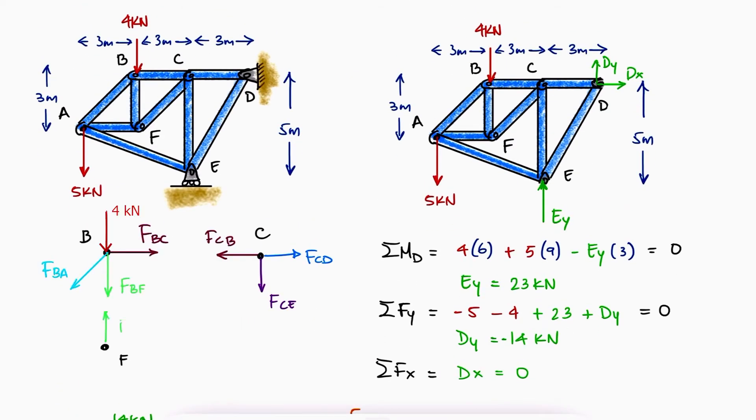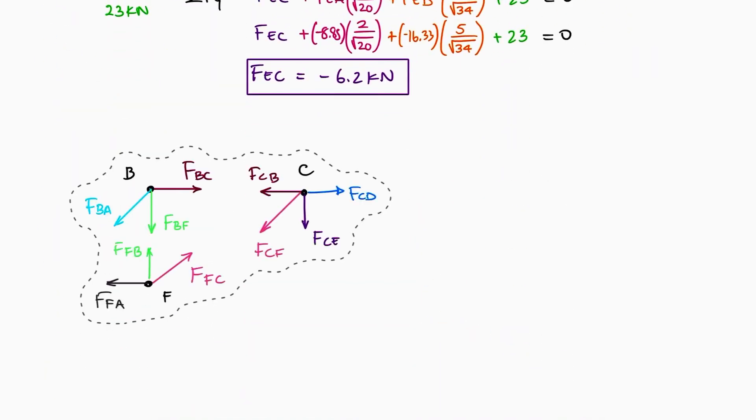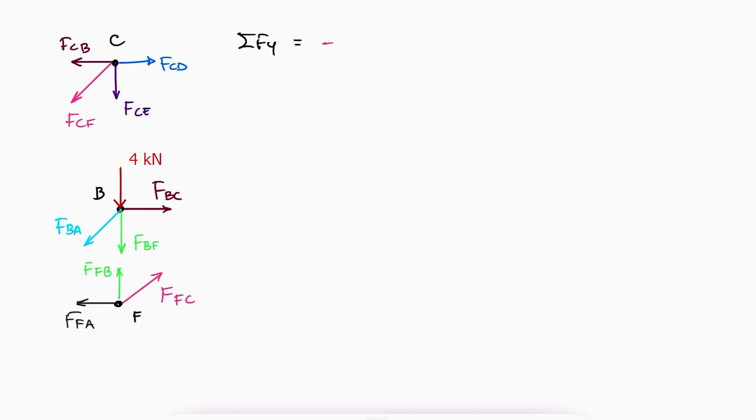Moving on to joints C, B and F, we see that at joint C, we only have two unknown variables. Once we find FCB, we'll also have two unknown variables at B and finally only FFA as an unknown variable at F. So, starting with joint C, we do sum of forces in Y to find FCF and sum of forces in X to find FCB.